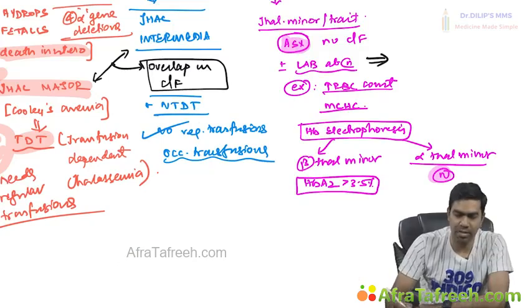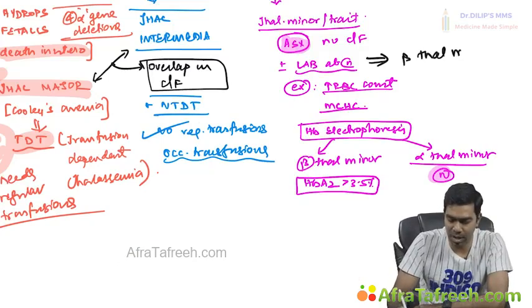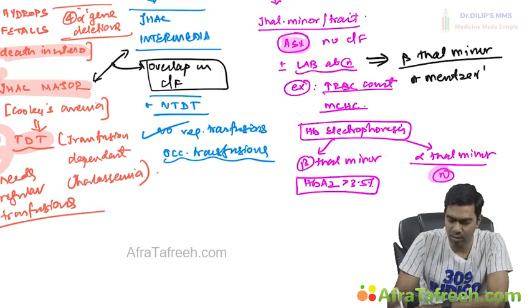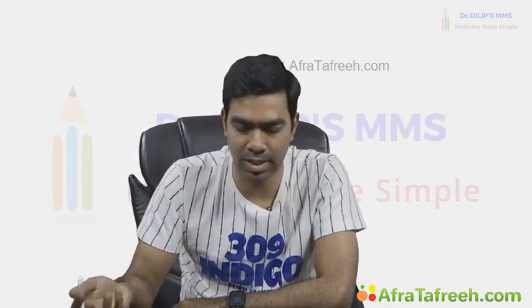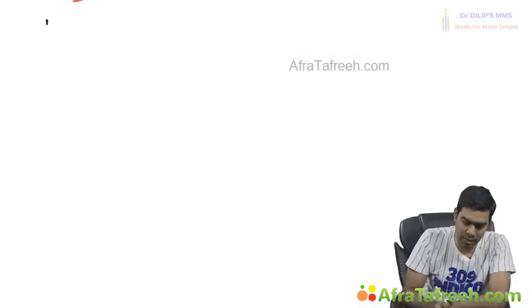Beta thalassemia minor can also be diagnosed by Mentzer index or NESTROFT — the Naked Eye Single Tube Red Cell Osmotic Fragility Test. These are the clinical classifications: major, intermediate, and minor. All three clinical forms — severe, intermediate, and mild — can occur with both alpha and beta thalassemia.